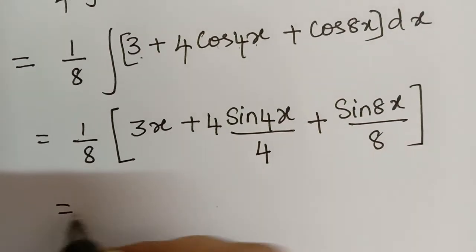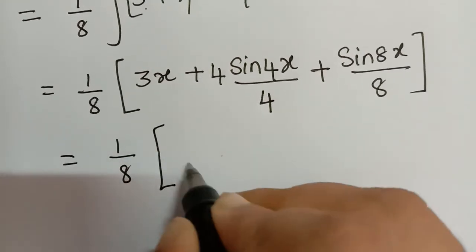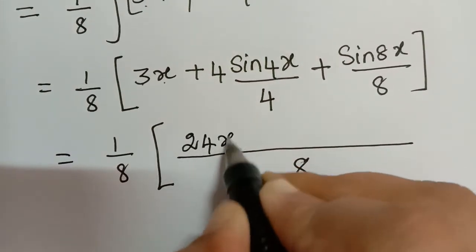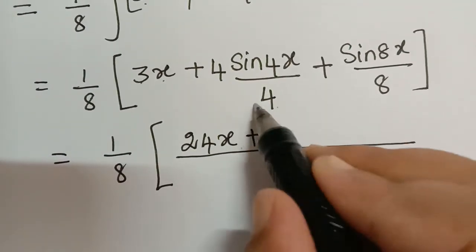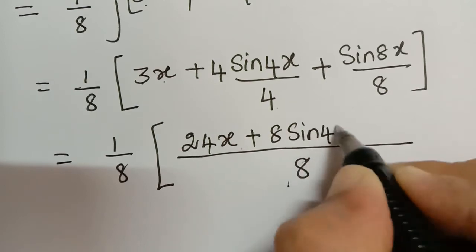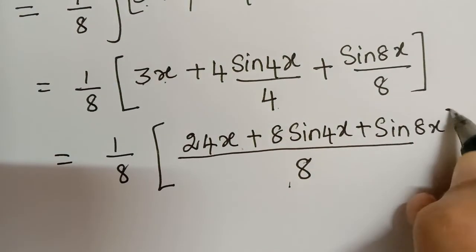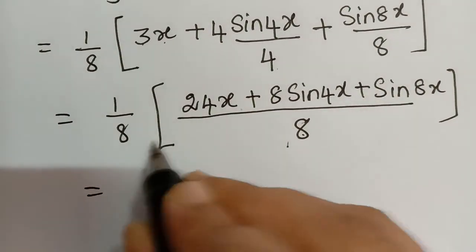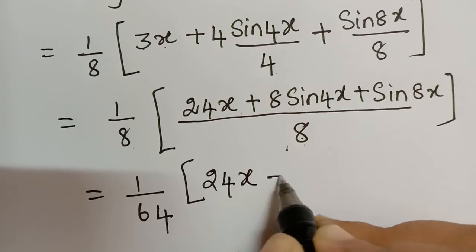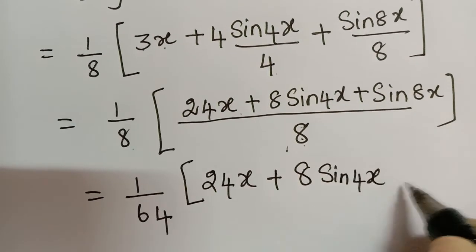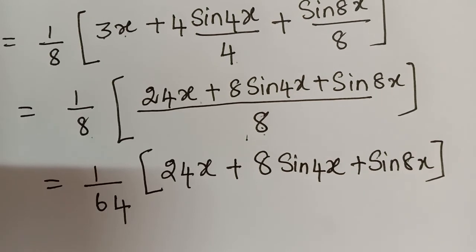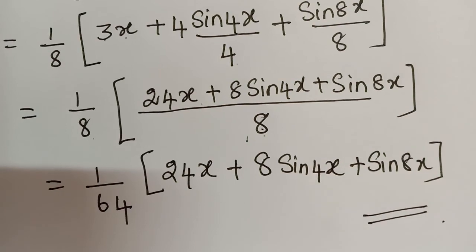Simplifying with LCM of 8: 3x becomes 24x, 4sin4x multiplied by 2 gives 8sin4x, plus sin8x, all over 8. Taking the 8 outside the bracket and multiplying with the outer (1/8), the final answer is (1/64)(24x + 8sin4x + sin8x) + C. This is a very significant problem which has appeared in many question papers. I hope you have understood. Thank you.